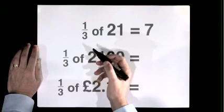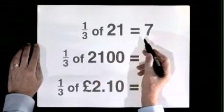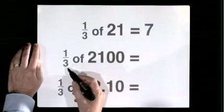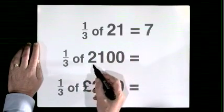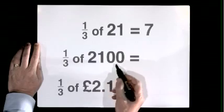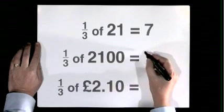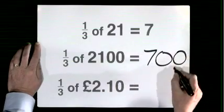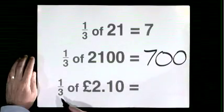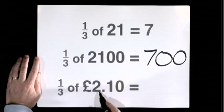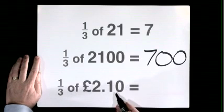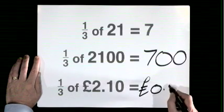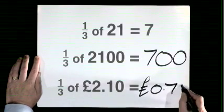One third of twenty one is seven. One third of two thousand one hundred is seven hundred. One third of two pounds ten is no pounds seventy.